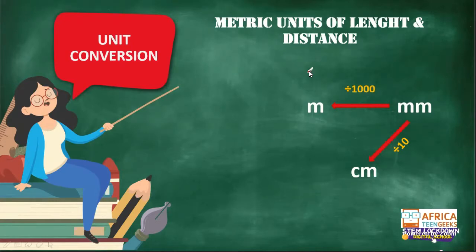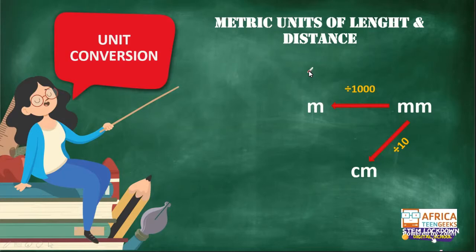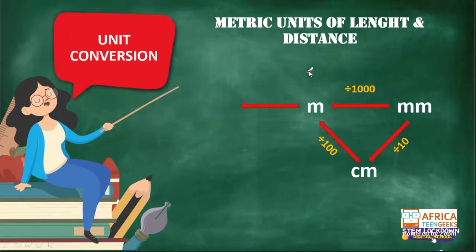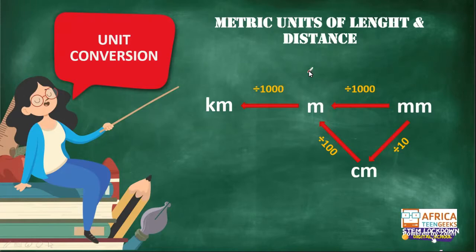Now we're not going to multiply — we are going to divide. If we want to convert from millimeters to meters, we will divide by 1,000. If we want to convert from millimeters to centimeters, we will divide by 10. If we carry on, we go from centimeters to meters — how many centimeters are there in a meter? 100, so we will divide by 100. And from meters to kilometers — how many meters are there in a kilometer? 1,000. So depending on which way we go, we either multiply or divide.